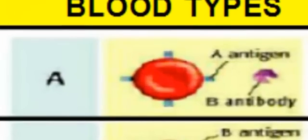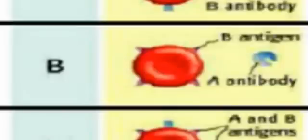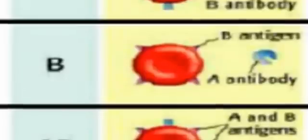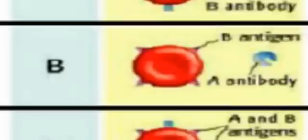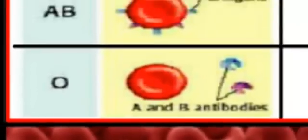For type A blood, there's a rectangular shape on the cell surface representing the A antigen — the protein the body uses to identify whether it belongs or is foreign. Type B blood has a different, triangular antigen. AB blood has both the rectangular A antigen and the triangular B antigen. And O blood has no surface antigens at all. So antigens determine blood type: A has the A antigen, B has the B antigen, AB has both, and O has none.